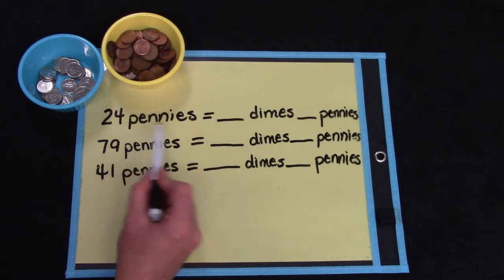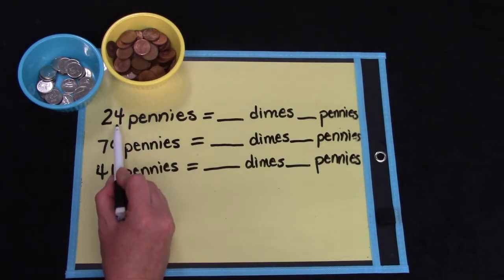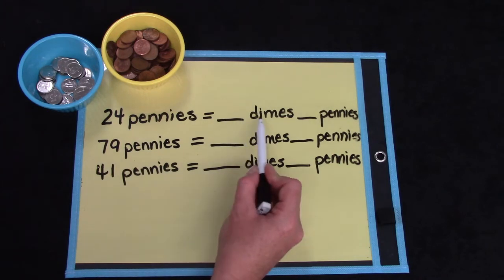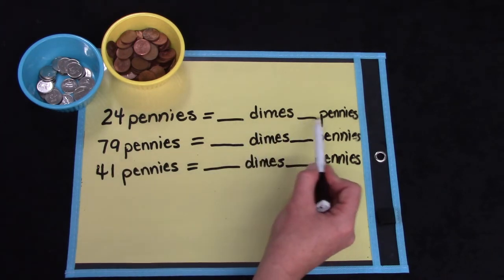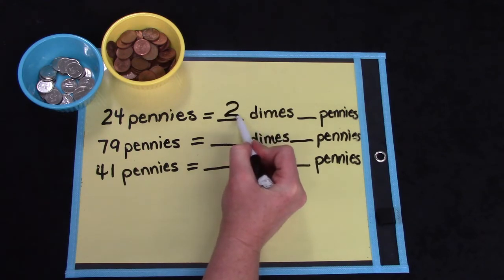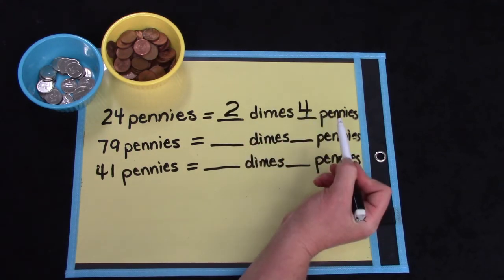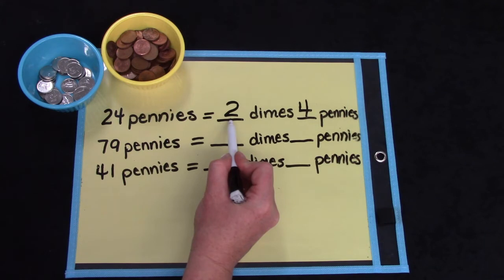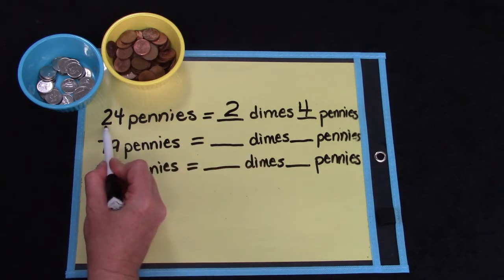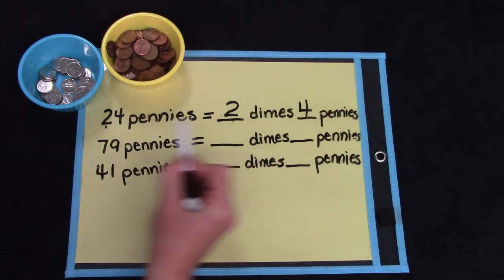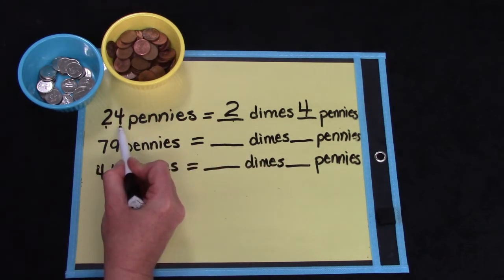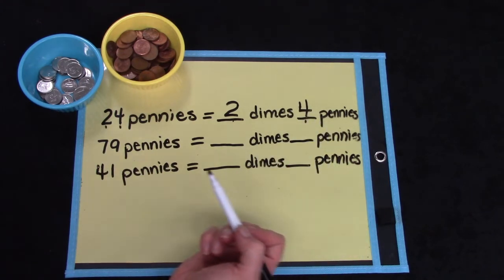Let's try to do some of these questions together. If we have 24 pennies, how many dimes do we have and how many pennies? Did you say 2 dimes and 4 pennies? We have 2 dimes because the 2 is in the tens place. It's telling us how many groups of 10 or how many dimes. And the 4 is in the ones place, telling us how many cents or pennies there are.